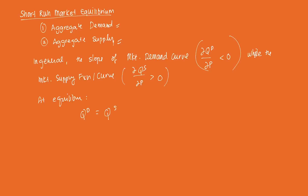We can solve for P. QD is some function of prices, and so is QS — some function of prices. We can then get equilibrium quantities and equilibrium prices using this relationship.